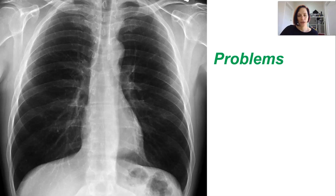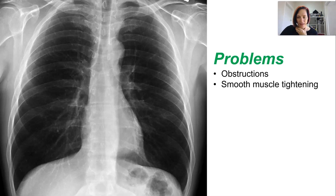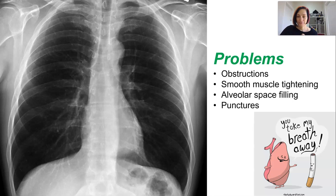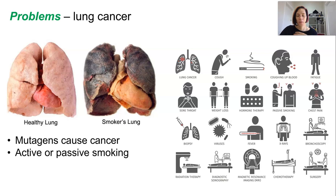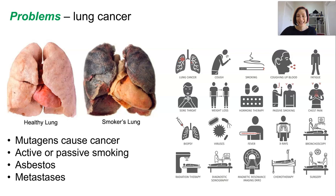Our intake of oxygen is absolutely vital for every single cell, so our respiratory system is incredibly finely tuned — but the more finely tuned it is, the more things can go wrong. We have obstructions, smooth muscle tightening around the airway due to allergens, alveoli space filling with water or mucus, and lungs can also be punctured. Lung cancer is extremely common and can be caused by chemicals or radiation. Smoking causes most cases due to the mutagenic chemicals in cigarettes, and there are also concerns around e-cigarettes and vaping. Passive smoking, air pollution, asbestos, and silica particles from construction dust can also cause lung cancer. Lung cancer can metastasize quickly because of the bloodstream running close by.